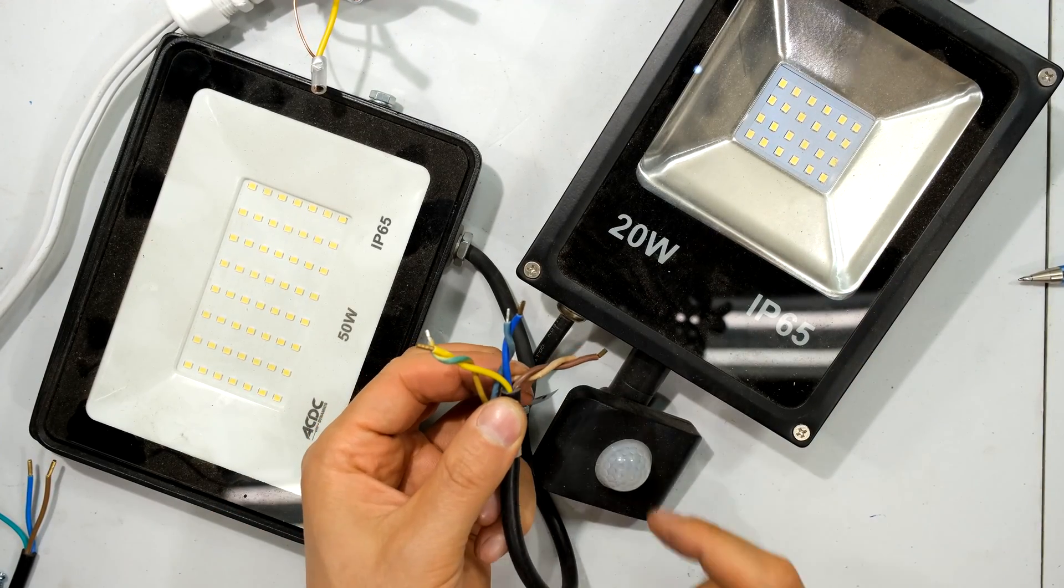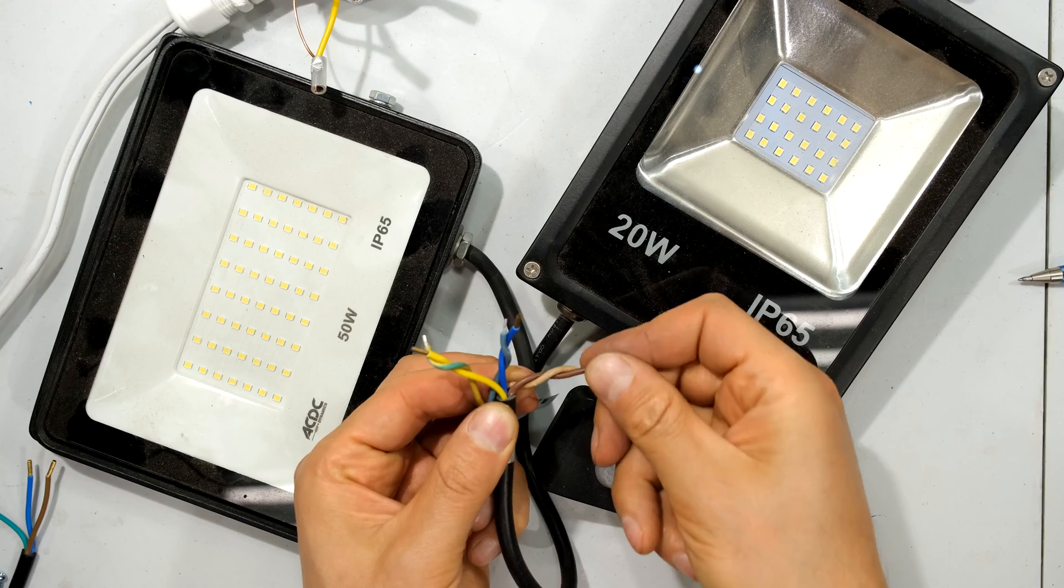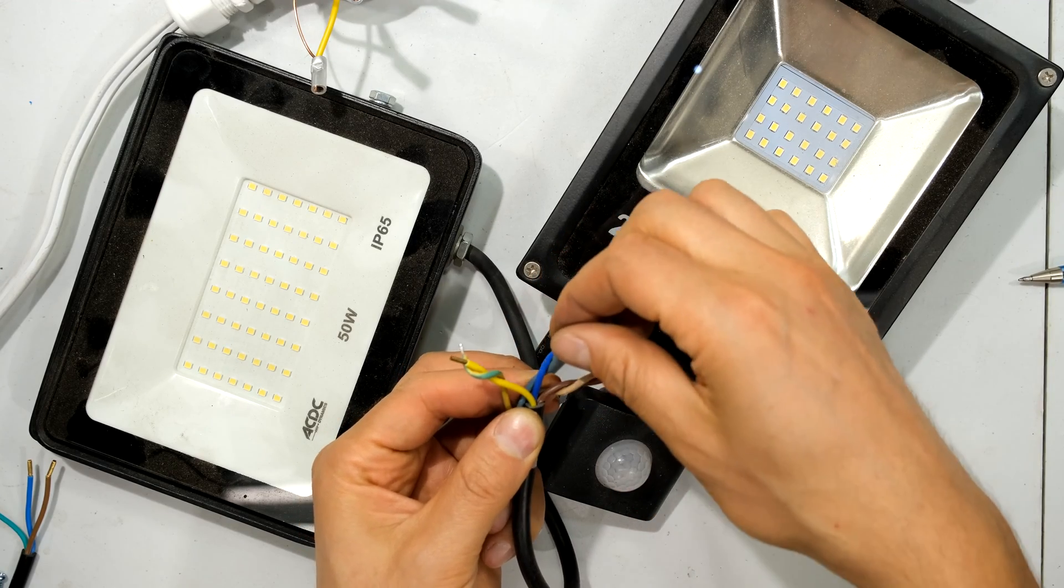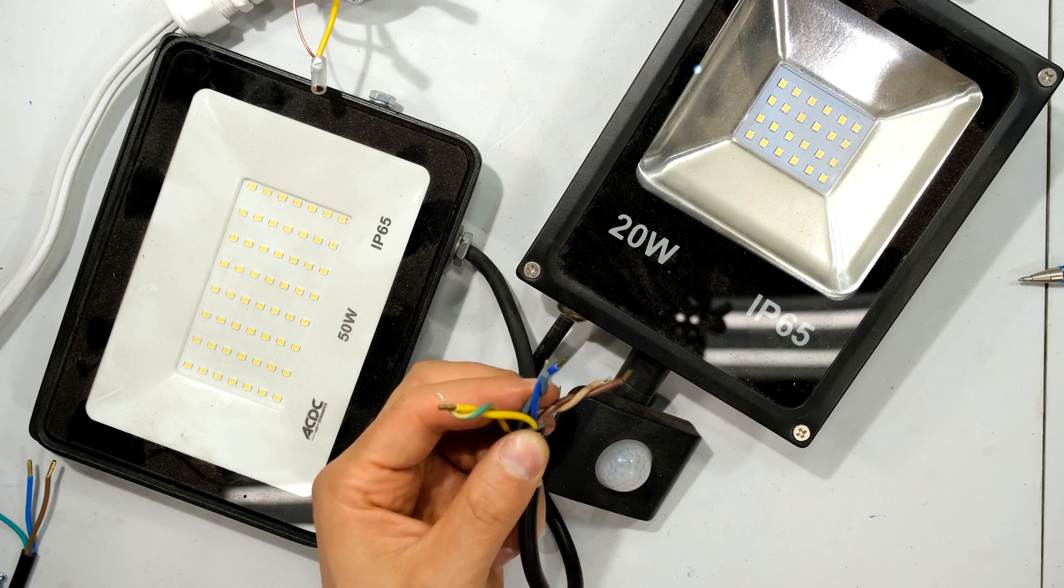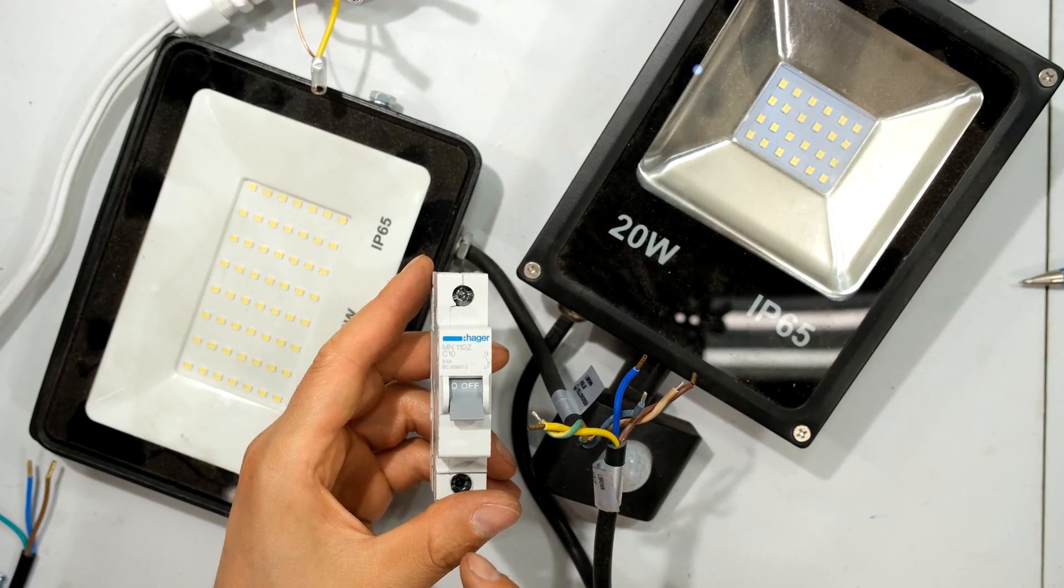So here are two lights. Just noting the live and the live would be connected to each other. The neutral and the neutral would be connected to each other. And the earth and earth would be connected to each other.